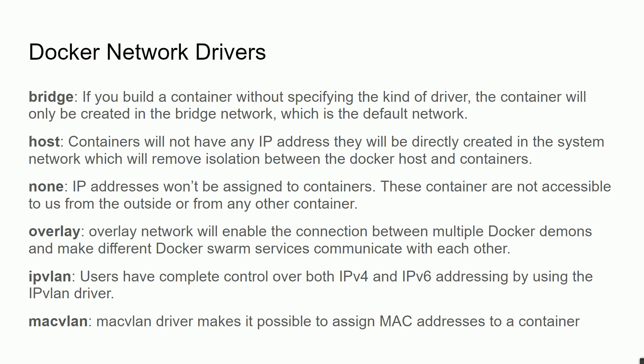The third driver is none. If you don't want to create any communication with localhost or another container, you can simply use none, in which no IP address will be assigned to the containers. These containers are not accessible from outside nor from any other container. Overlay network enables connection between multiple Docker daemons and makes Docker Swarm services communicate with each other. IPvlan gives users complete control over IPv4 and IPv6 addressing. And lastly, macvlan driver makes it possible to assign a MAC address to a container.